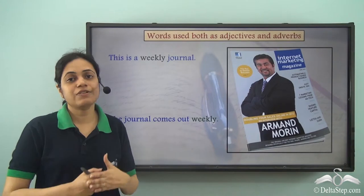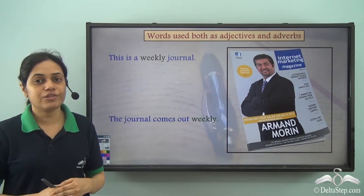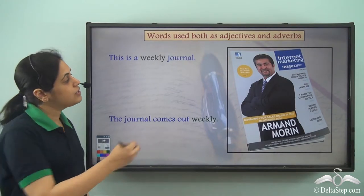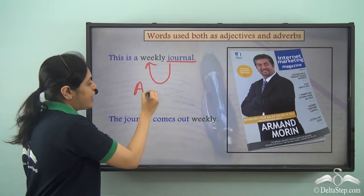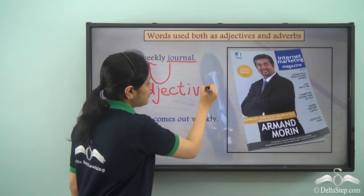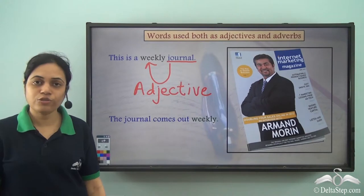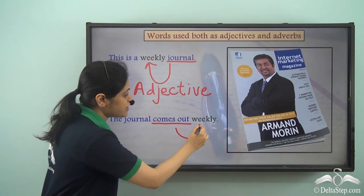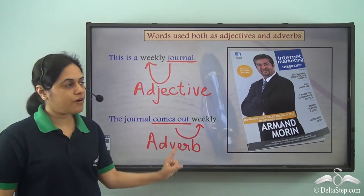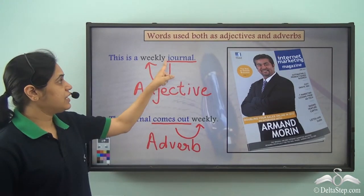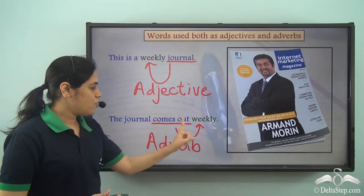But at times certain words can be used both as adjectives and adverbs, like the word weekly. In 'This is a weekly journal,' journal is a noun and weekly describes the type of journal — so weekly is an adjective. However, in 'The journal comes out weekly,' weekly is describing comes out, which is a verb — so weekly is an adverb. Notice that as an adjective it comes before the noun, and as an adverb it comes after the verb.